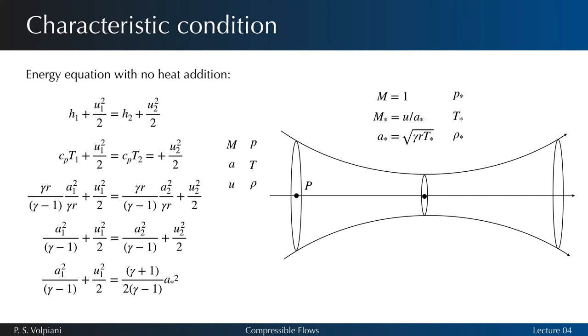The quantity a star can be computed at any point in the flow, even if it's not really adiabatic. In this case, if the flow is non-adiabatic from A to B, then a star A is different than a star B.